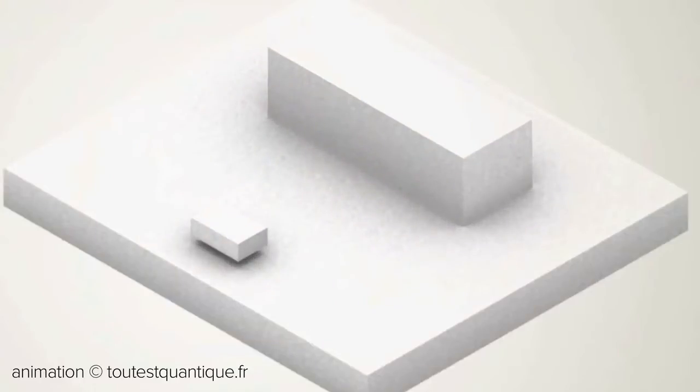At the quantum mechanical level, particles behave both as solid objects and as waves. When a quantum object, like an electron, is sent toward a thick barrier, it bounces off, exhibiting particle-like properties.